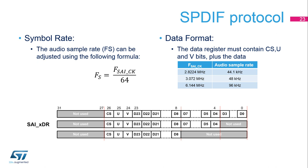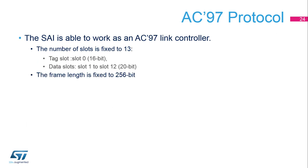The data inside the transmit FIFO must be adjusted, as shown in the slide. The MSB must always be at position 23. The SAI is able to work as an AC-97 link controller. When this protocol is used, the frame length, the slot number, and slot length are fixed by the hardware.